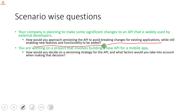You are working on a project building a new API for a mobile app. How would you decide on a versioning strategy and what factors would you take into account? From previous questions we have seen the points to keep in mind: ensure breaking changes are avoided, the new version is backward compatible, and the existing API is not impacted.